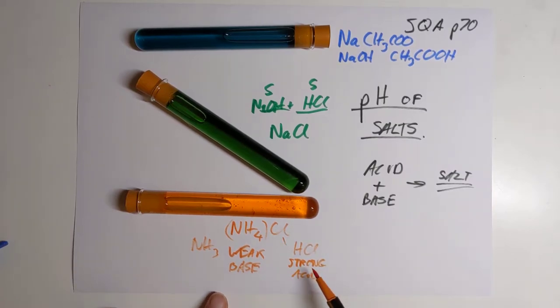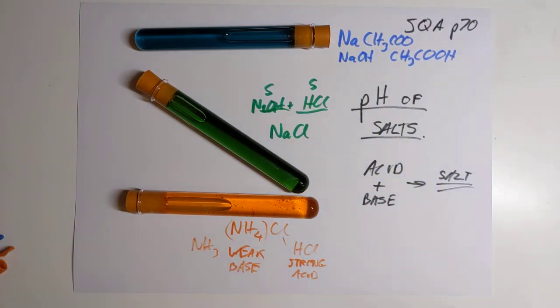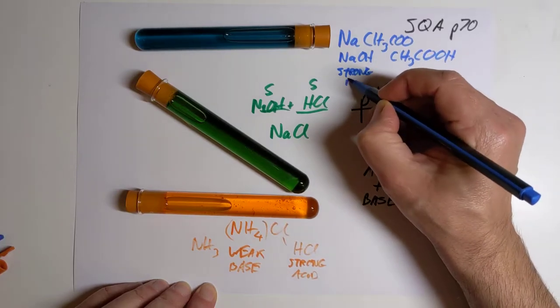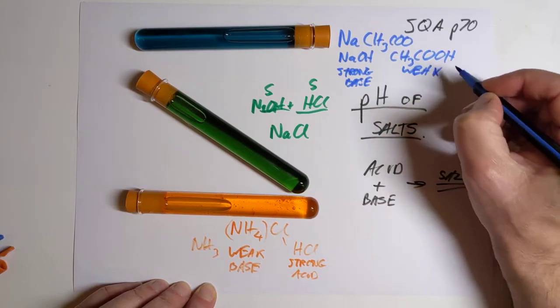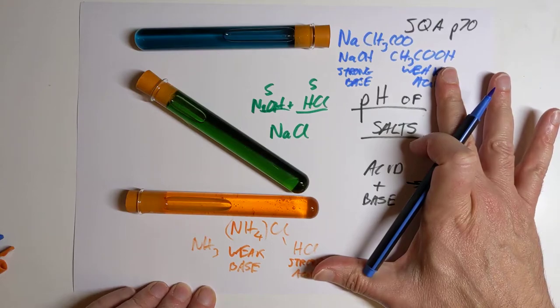So, weak base, strong acid. Strong base, strong acid. This time, the other way round. We have got a strong base and a weak acid. And obviously, the strength is affecting the pH of the salt.